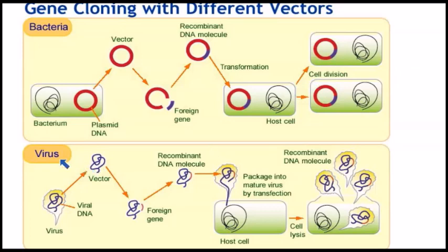With the virus, it's the same concept. You take out the viral DNA — that is the vector in this case — and insert the foreign gene of interest into that viral DNA, forming recombinant DNA similar to the bacterial example. That recombinant DNA is then inserted into the whole cell, and as the whole cell multiplies, the genetic material also makes copies of itself. This is the basis and foundation of genetic engineering.